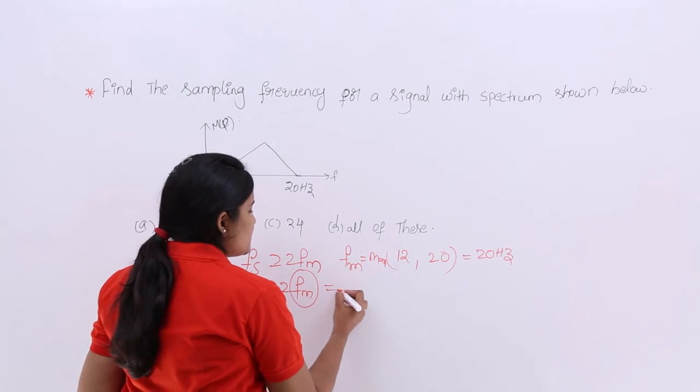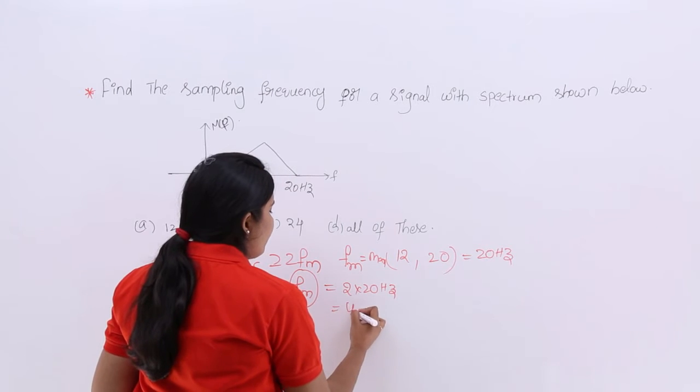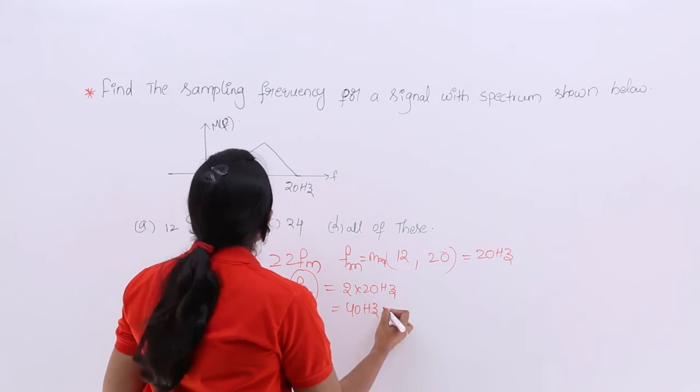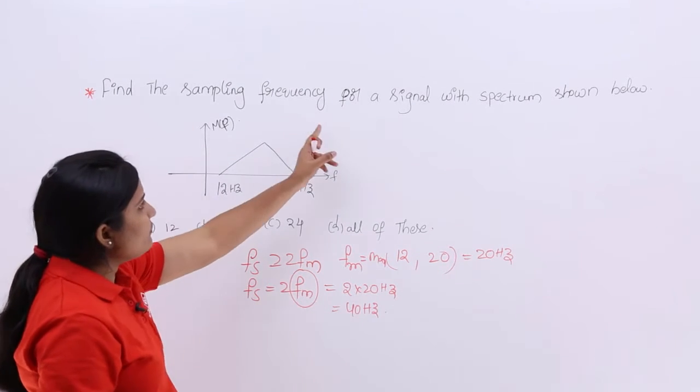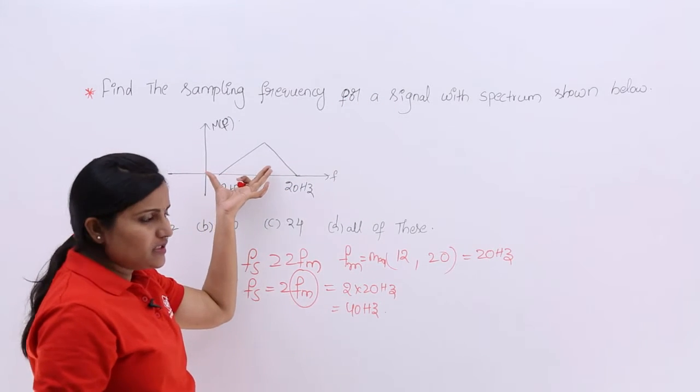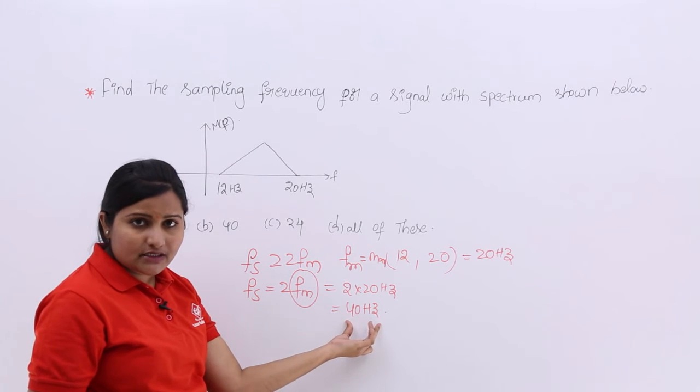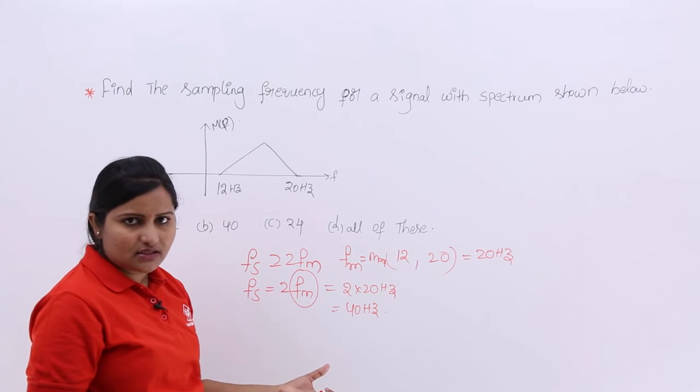This fs is equivalent to 2 into 20 hertz, then I am going to get 40 hertz. Here the sampling frequency for this signal with spectrum like this we need to consider 40 hertz, at least 40 hertz, 40 and greater you can consider.